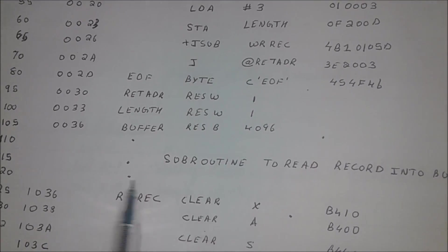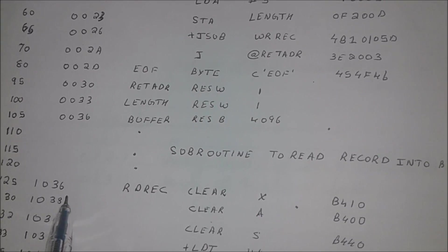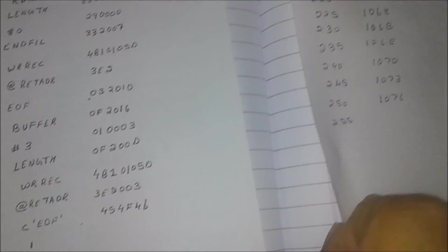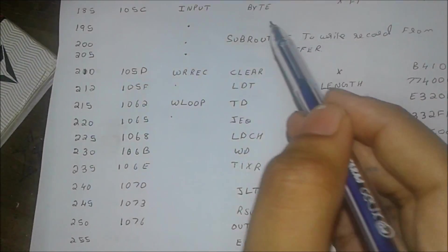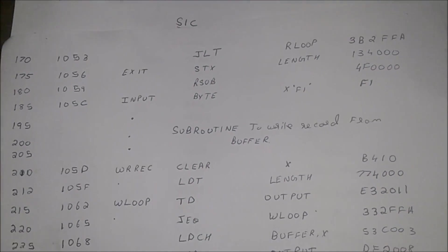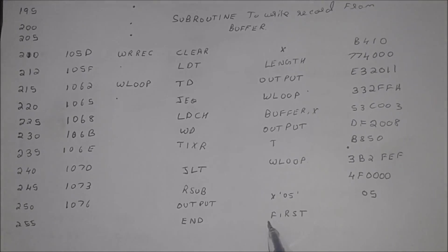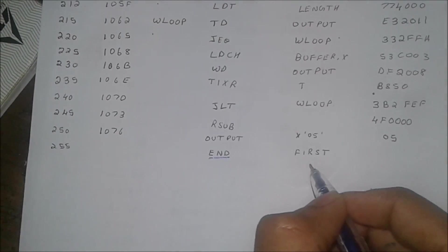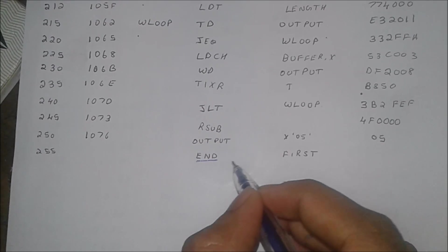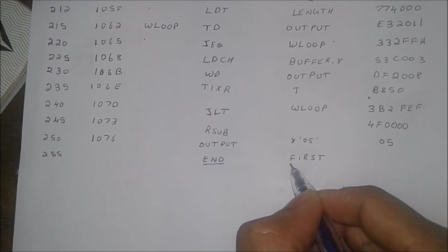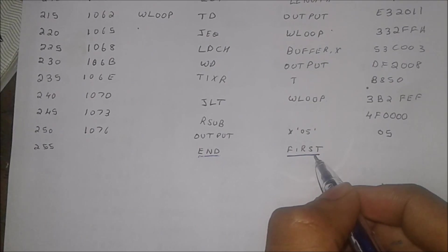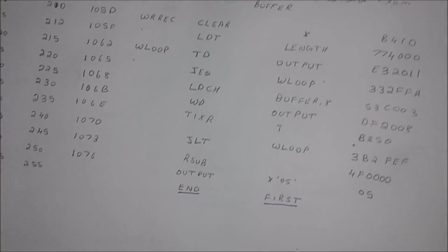Till here is the program, and then we give some gap. Then we define the subroutine, and then there is another subroutine. At the last we have the end statement, and after end we give the first — meaning the program which we started over here will end over here.